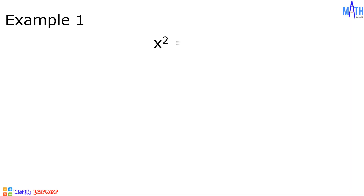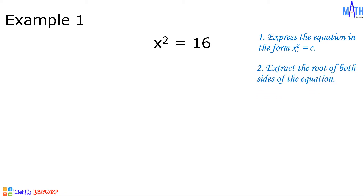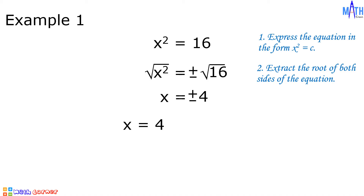Example number 1: let us solve x squared is equal to 16. Step 1, express the equation in the form x squared equals c. Since this equation is already in that form, let us proceed to Step 2: extract the root of both sides. Square root of x squared equals positive or negative square root of 16. Since square root of x squared equals x, and positive or negative square root of 16 equals positive or negative 4, we have x sub 1 equals positive 4 and x sub 2 equals negative 4.